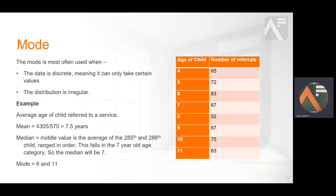The median is calculated by finding the middle value. But as there are an even number of children, the median is the average of the 285th and 286th child's age. As both fall into the 7 year old category, the median is 7. Only the mode shows the fact that there are two peaks at which referrals are made: at 6 years old and 11 years old.